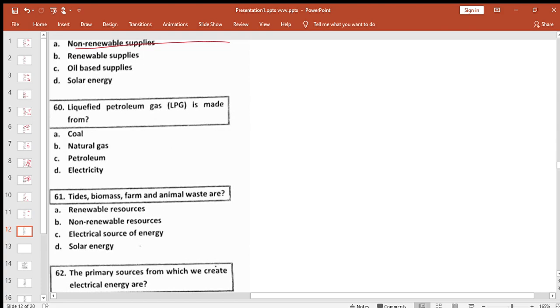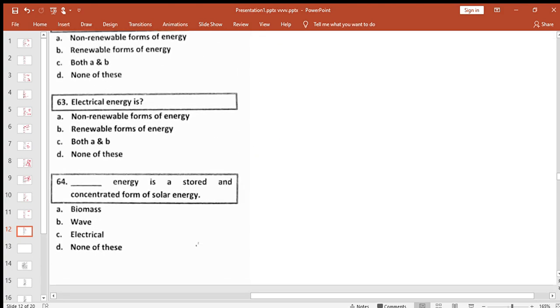Liquefied petroleum gas is made from natural gas. Farm and animal waste is biomass. The primary sources from which we create electrical energy are both renewable and non-renewable sources.